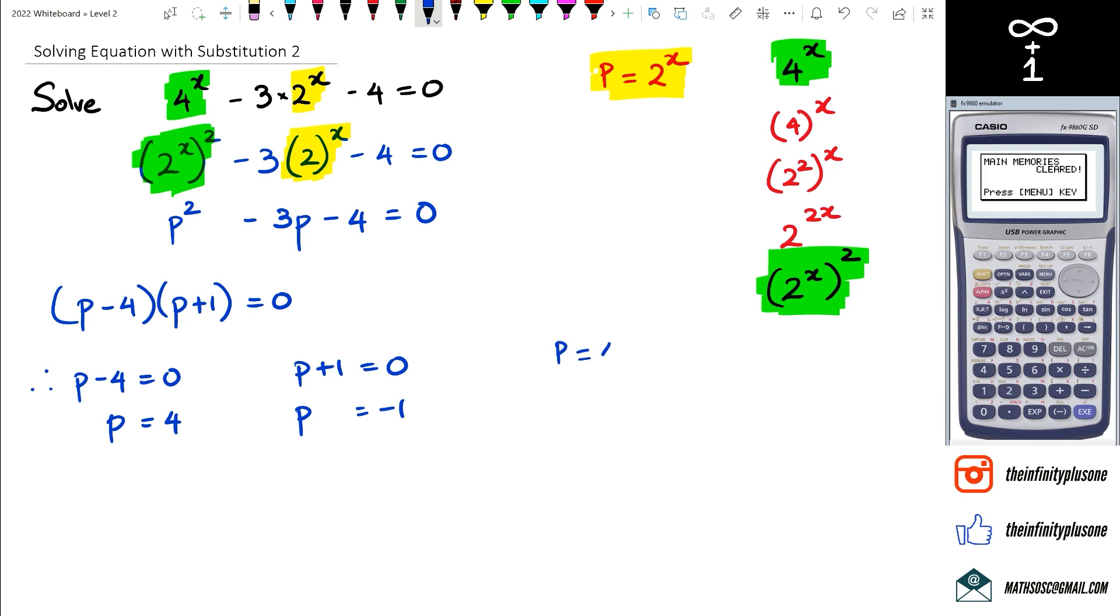We're going to use P = 4 first. So 2^x = 4, and we can see here that x = 2. And then we also got P = -1, so we've got 2^x = -1.